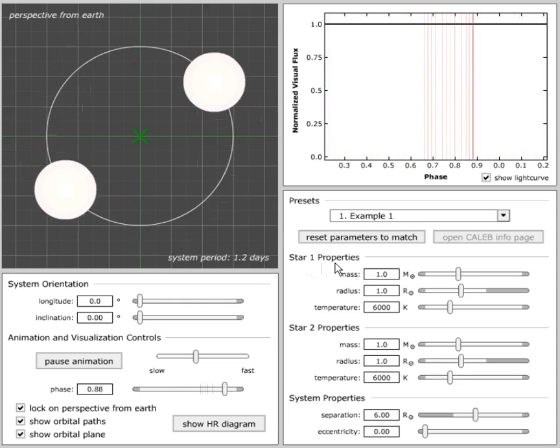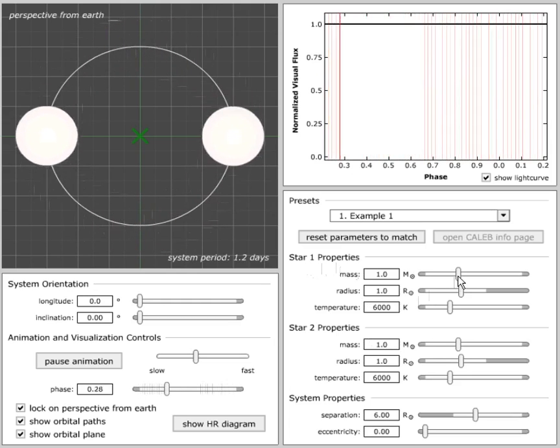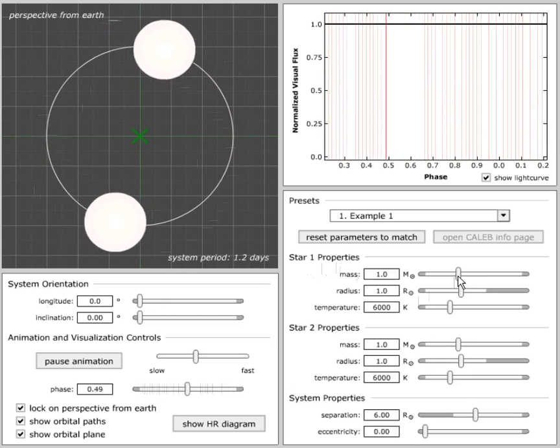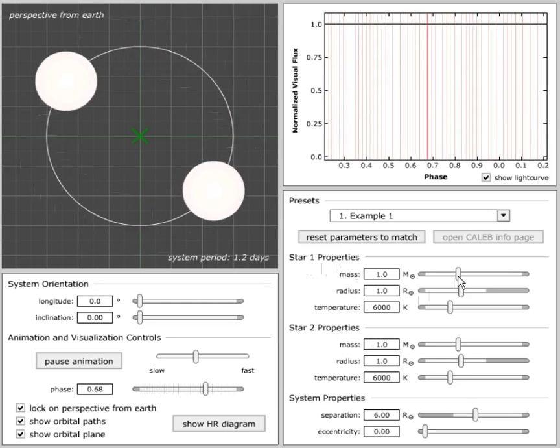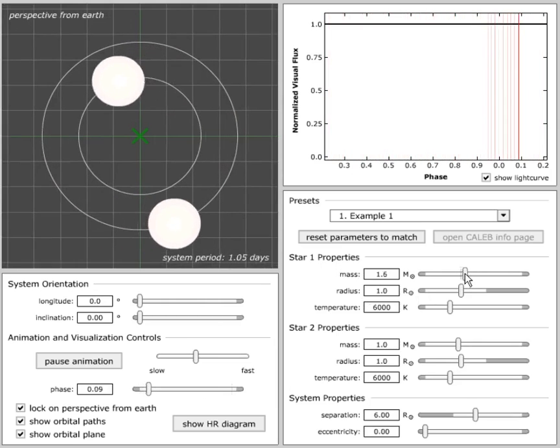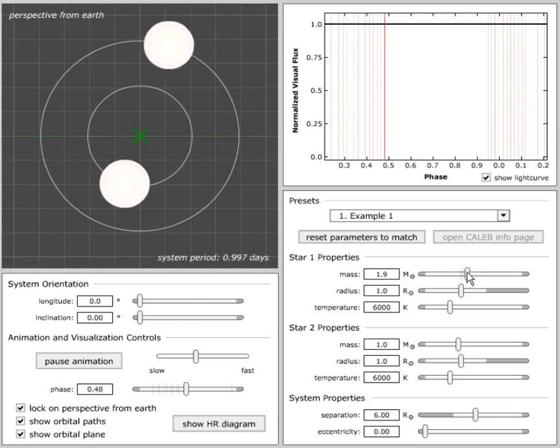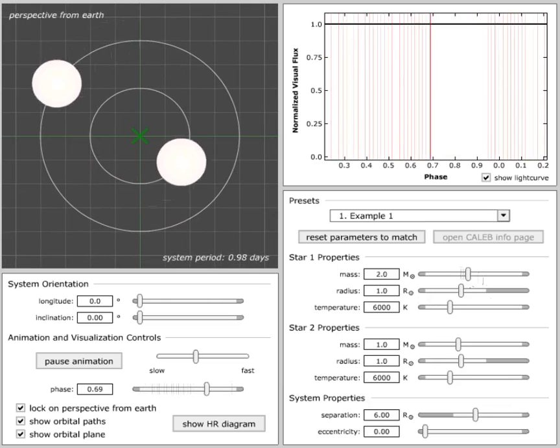I'm going to go over here to the star properties, and I'm going to change the mass of star one to two solar masses. What do you predict will happen to the system if I do that? And most students will predict that the more massive star will be closer to the center of mass, and the less massive star farther away.